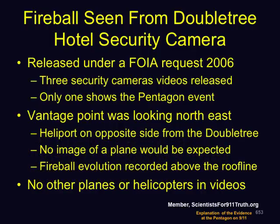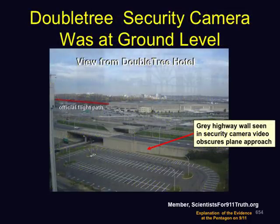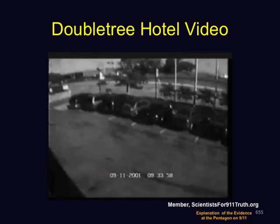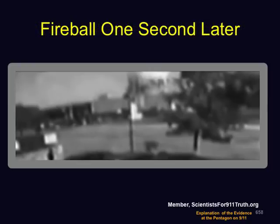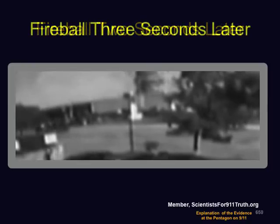A fireball from the Doubletree Hotel security camera. The footage was released under a Freedom of Information Act request in 2006. Three security camera videos were released, but only one shows the Pentagon event. The heliport is on the opposite side from the Doubletree Hotel, so no image of a plane would be expected. The evolution of the fireball is above the roofline. No other planes or helicopters are in the video, and no plane is seen flying over the Pentagon before or after the fireball. Here is the view looking toward the Pentagon; the official path of the plane is shown in red. Before impact we have this image; then the fireball begins to be visible, one second later it's here, two seconds later it's here, and three seconds later it's here.